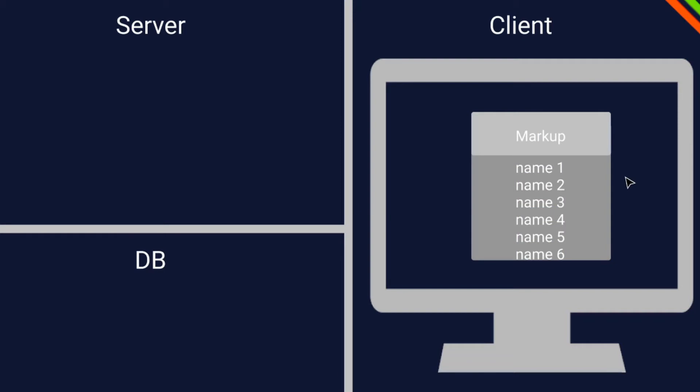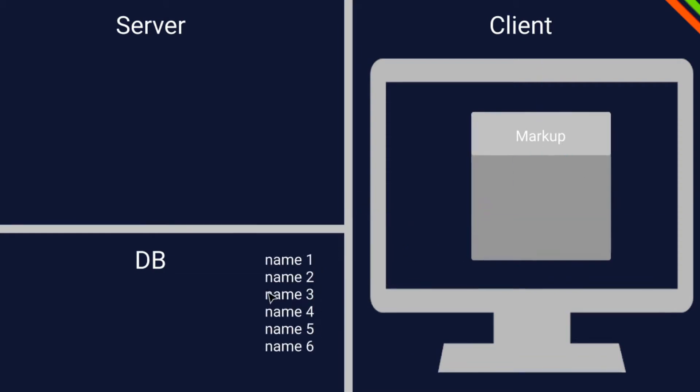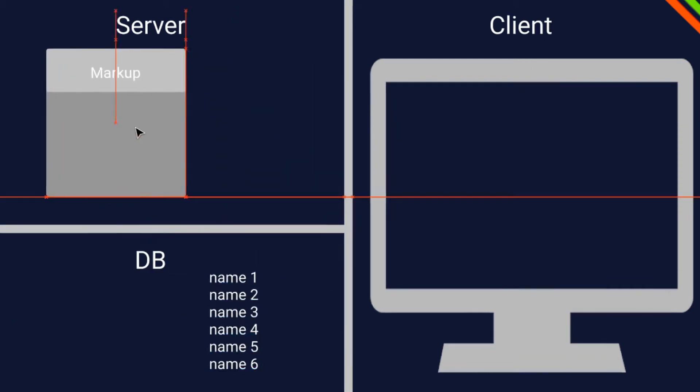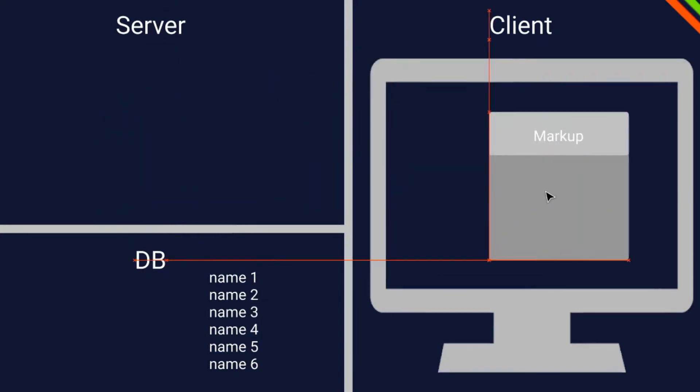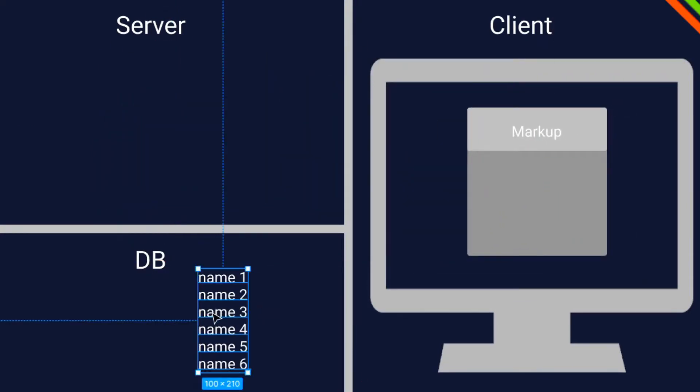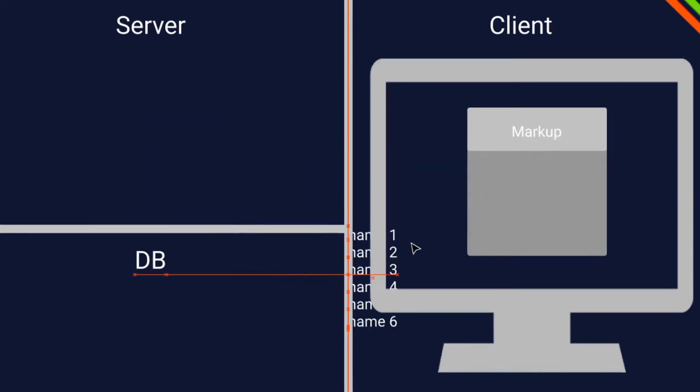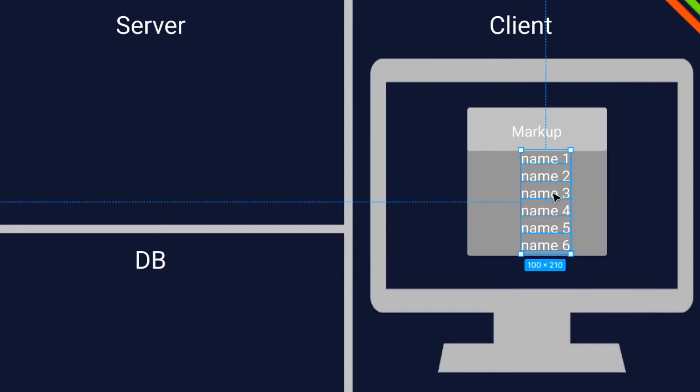Client-side rendering became popular with all the JavaScript frameworks. Beforehand, we didn't really use client-side rendering because it has some disadvantages — one of them is it's not so SEO friendly. Because if the user asks for data, we first serve the markup and then and only then we ask for the data. We will see later how that actually looks in code.